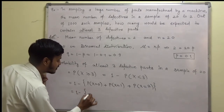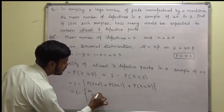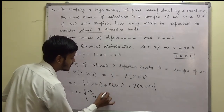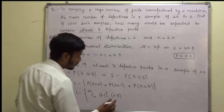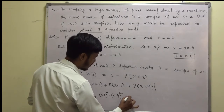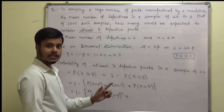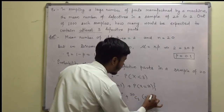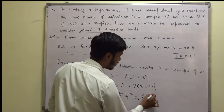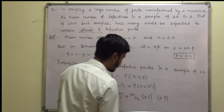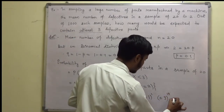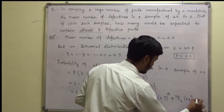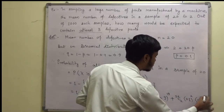This is 1 minus: 20C0 times 0.1 to the power 0 times 0.9 to the power 20, plus 20C1 times 0.1 to the power 1 times 0.9 to the power 19, plus 20C2 times 0.1 to the power 2 times 0.9 to the power 18.